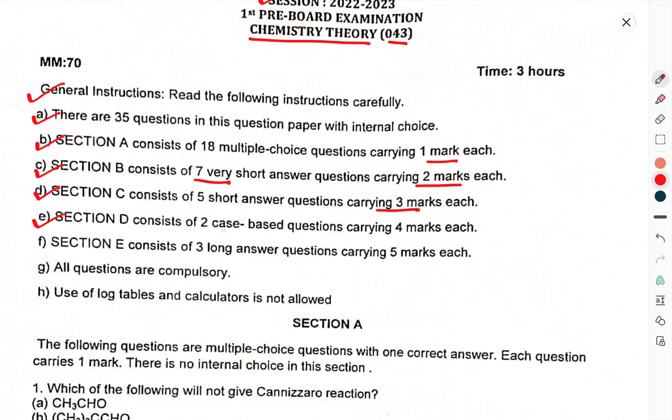Section C consists of 5 short answer questions carrying 3 marks each. Section D consists of 2 case-based questions, 4 marks each. Section E consists of 3 long answer questions carrying 5 marks each. All questions are compulsory. Use of log tables and calculators is not allowed.